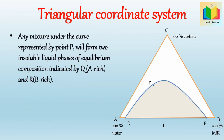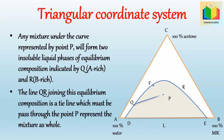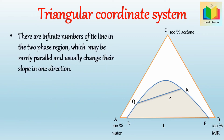Any mixture under the curve represented by point B will form two insoluble liquid phases of equilibrium composition, indicated by point Q (which shows the A-rich phase) and point R (which shows the B-rich phase). The line QR joining these equilibrium compositions is a tie line, which must pass through point B representing the mixture as a whole. The line joining the equilibrium compositions of the two phases is called a tie line. There are infinite numbers of tie lines in the two-phase region, which may be rarely parallel and usually change their slope in one direction.